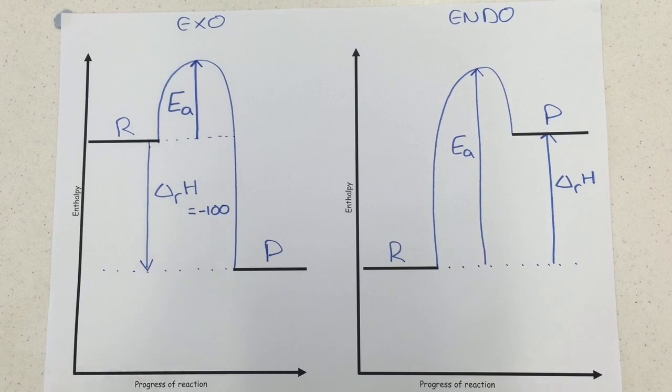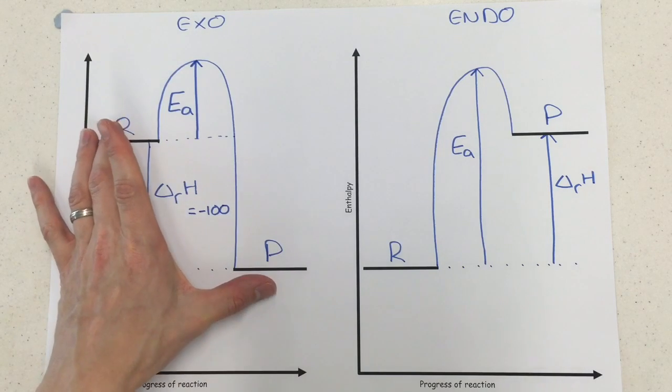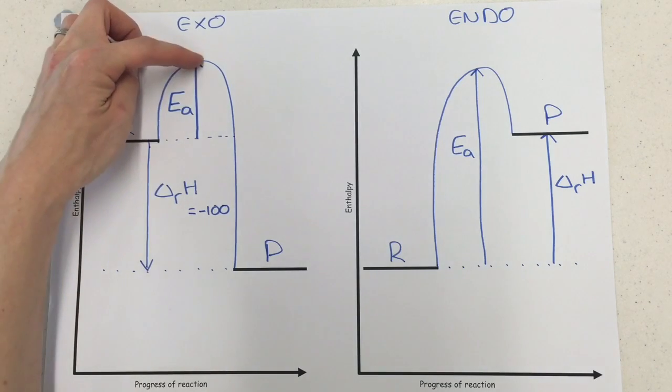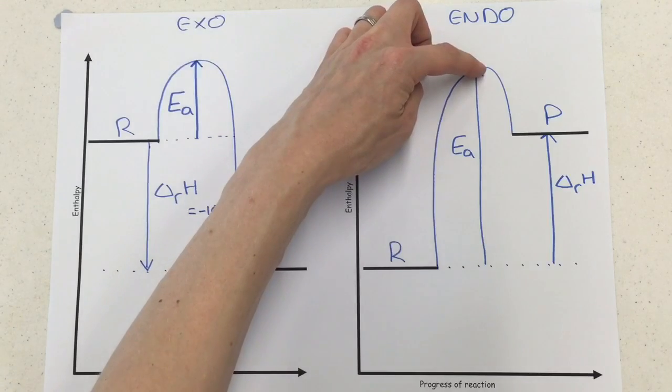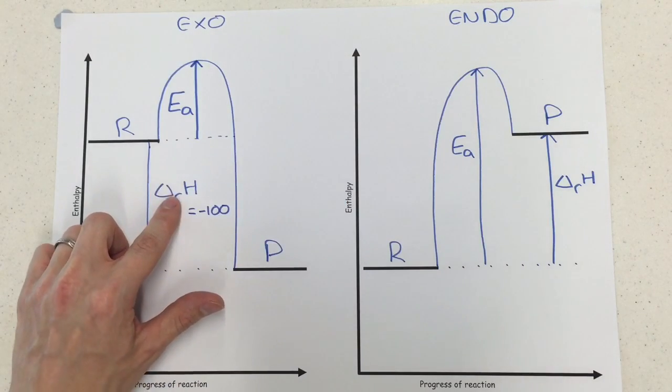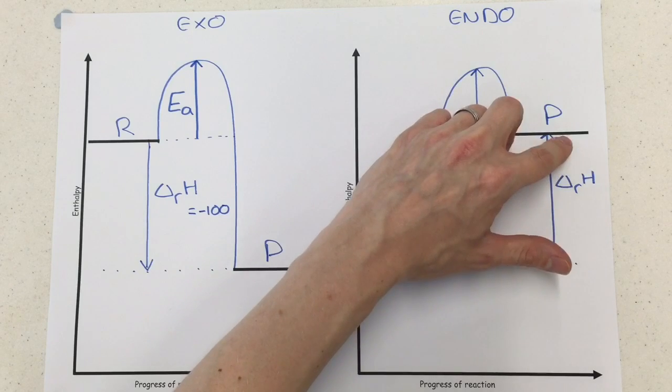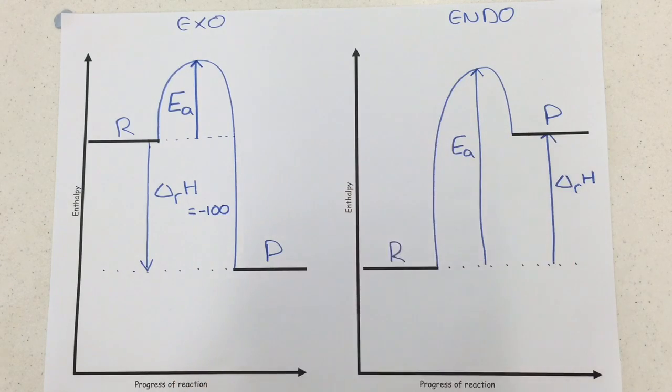In the real exam don't just write R and P, actually label on what those reactants and products are. Remember that the activation energy is always the reactants to the top of the curve in either diagram, and that the enthalpy change is always the difference between reactants and products as you can see here, and the arrow tells you what sign that should have.